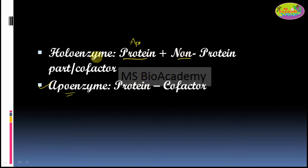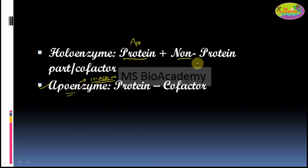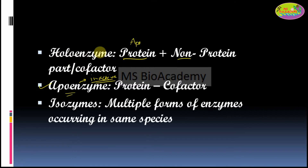If the cofactor is not bound to the enzyme, it is called an apoenzyme. But if the cofactor is bound to the protein, it forms a functional holoenzyme. Apoenzymes are in an inactive state — they are the inactive protein part. In order to become activated, they need to bind with the non-protein part, the cofactor or coenzyme, to form the functional active holoenzyme.